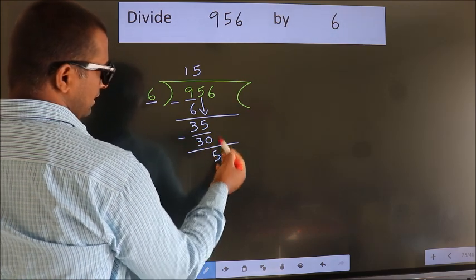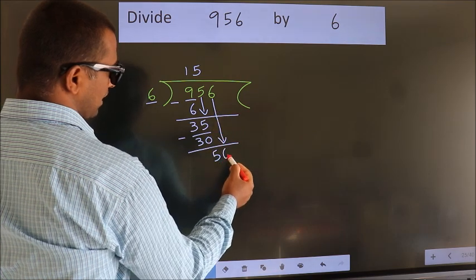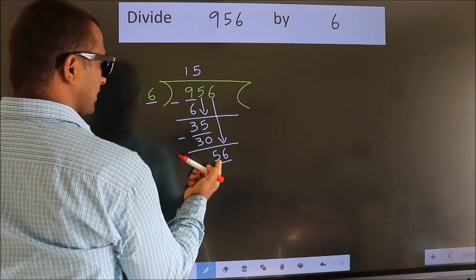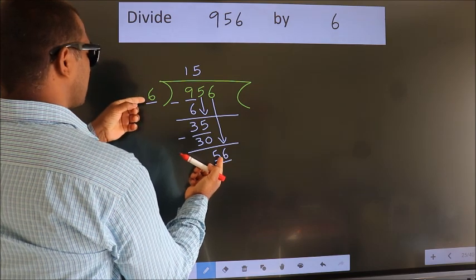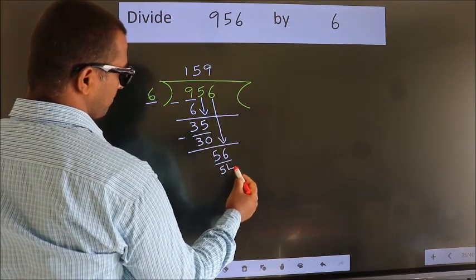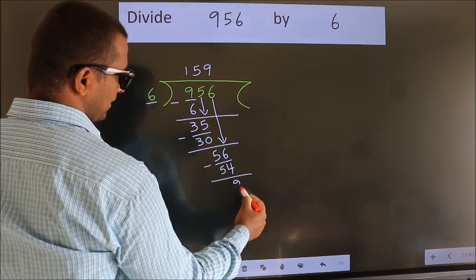After this, bring down the beside number. So, 6 down. So, 56. A number close to 56 in 6 table is 6 9s, 54. Now we subtract. We get 2.